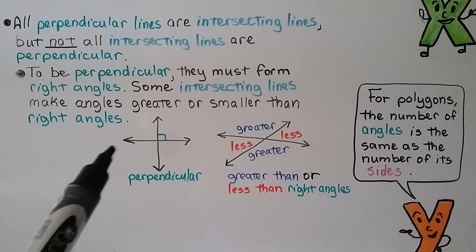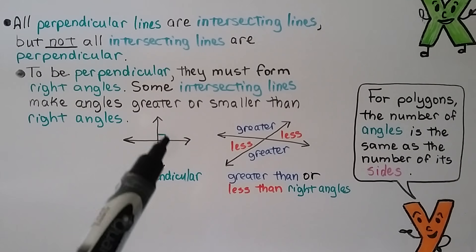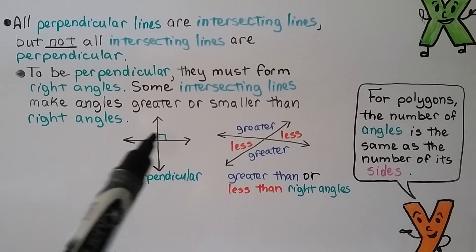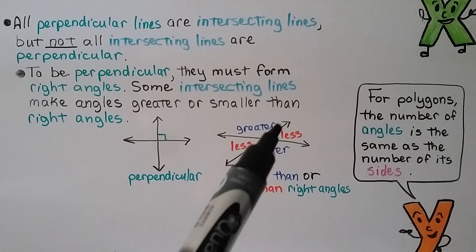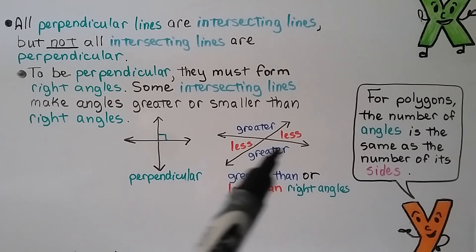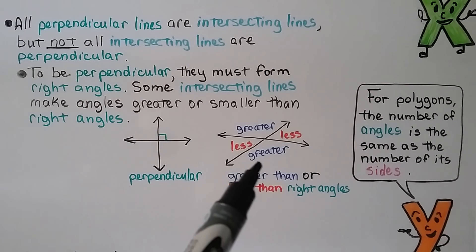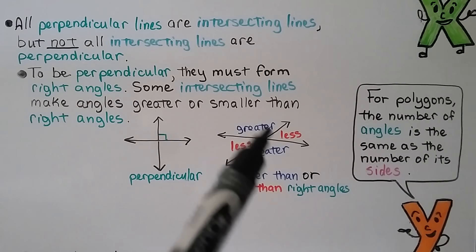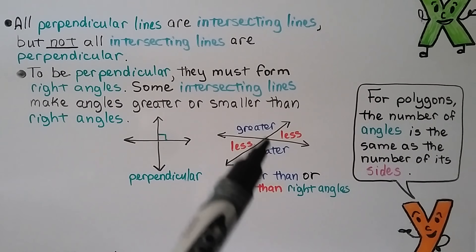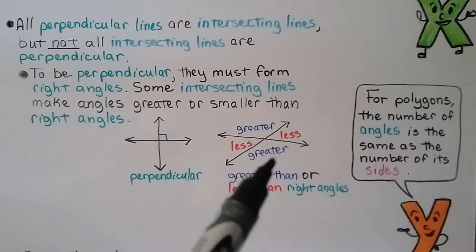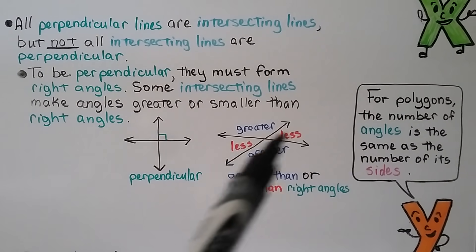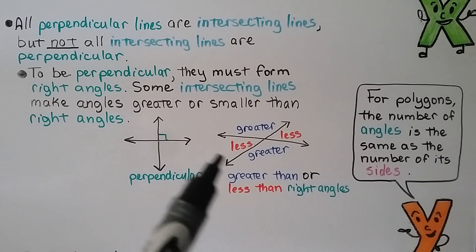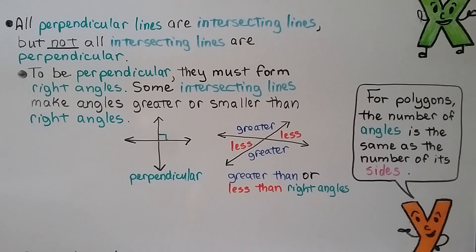So here, these are perpendicular lines making right angles in the center. But these are intersecting lines that are not perpendicular — there are no right angles here. These two angles are greater than a right angle, and these two angles are less than a right angle.